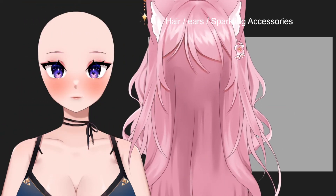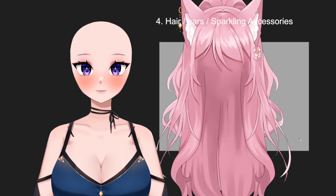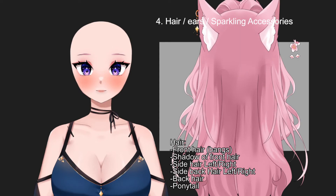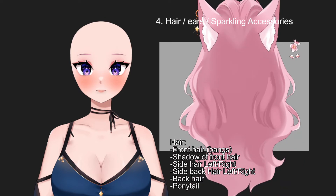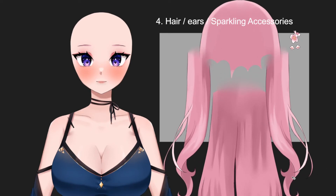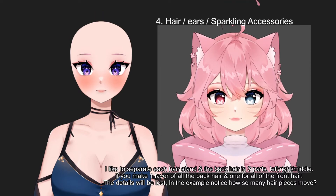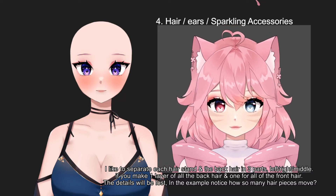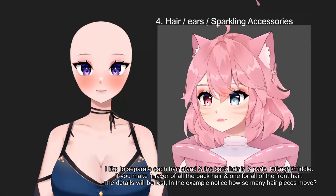Hair separation is one of the harder parts, especially for long hair. I separate it into: the front part (usually the bangs), side hair left and right — very useful when the model moves left or right — side back hair left and right for the same reason, back hair, and the ponytail. For the back hair specifically I like to separate it into three parts: left, right, and middle. If you make all the hair into just one layer it will look very weird. Separating individual hair strands and pieces makes a real difference in the detail the rigger can create when animating.